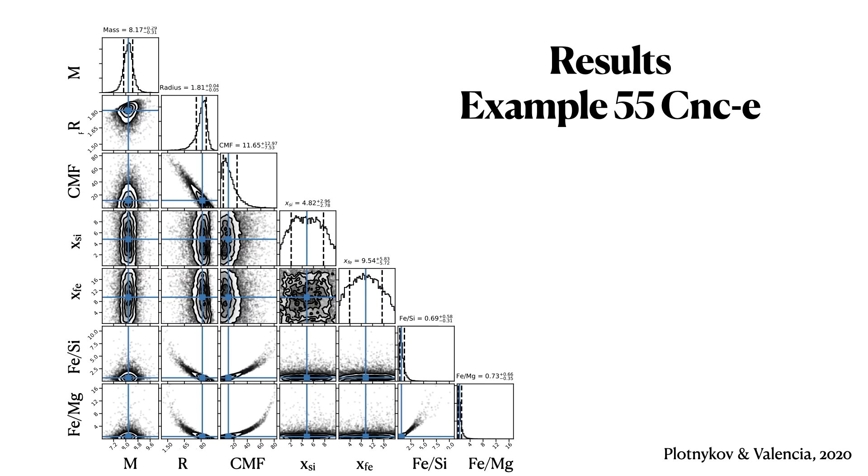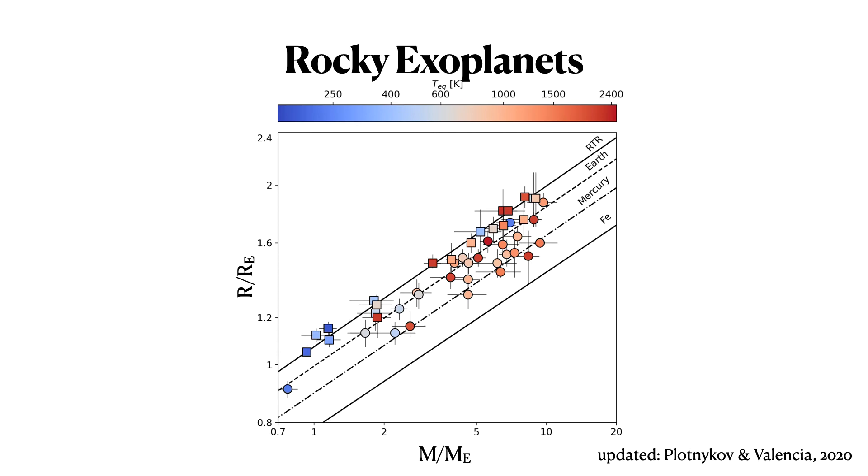So this is one example of a planet 55 Cancri e. You see the mass is the radius, the core mass fraction that we recovered, the amount of silica in the core, the amount of iron in the mantle on these two derived parameters. Clearly, you see that the core mass fraction is the one that has the most impact on the radius given the mass. And so we did this for one planet, and we did it for all the planets in our sample.